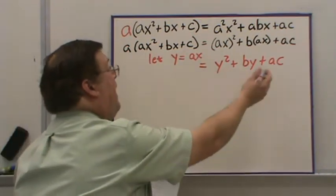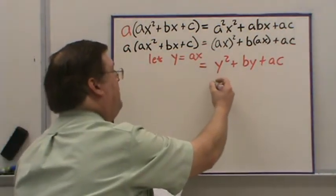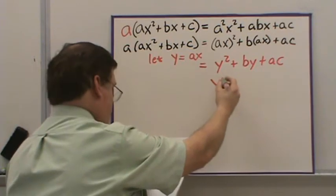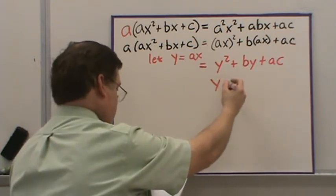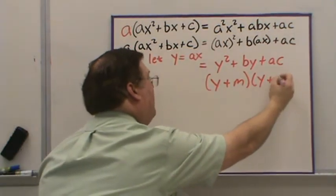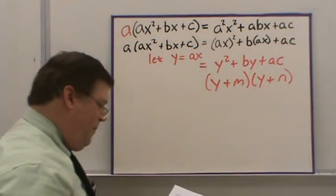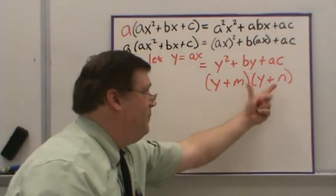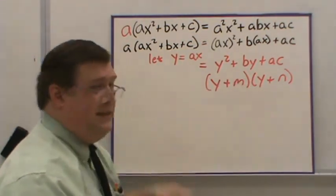So I would factor this and I would end up getting something like Y plus M and Y plus N, where M and N are the two numbers that multiply to give me AC but add to give me B.